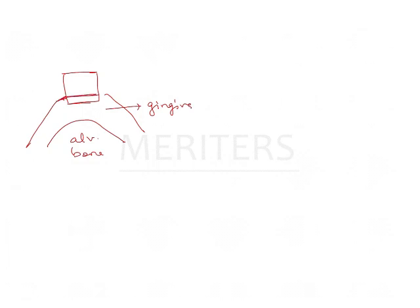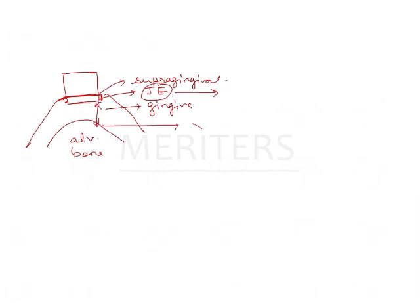If you want to place the margin supragingivally, no problem — go ahead as it is. But supposing you want to give a subgingival margin, then this amount of gingiva is affected and the junctional epithelium is affected. In this case, the total biologic width is still around 2 mm or greater, so biologic width has not been touched.